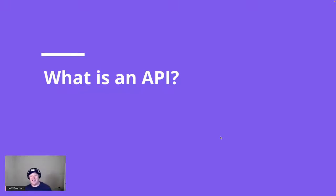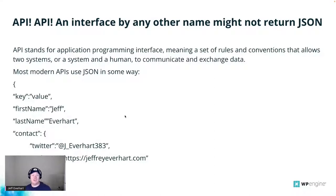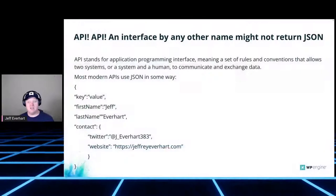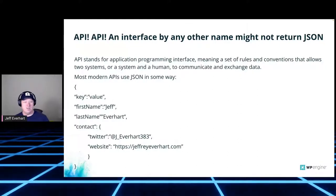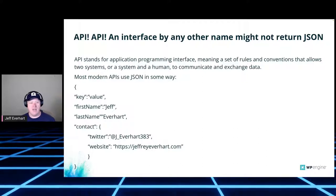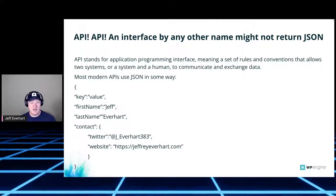I've said that word 'API' a lot, so let me explain what these terms mean. API stands for Application Programming Interface. It's a set of rules or conventions that allows two systems - maybe WordPress and an application, or sometimes a system and a human - to communicate and exchange data. No two APIs are exactly the same; some follow the same patterns and rules but there will be slight differences between them.